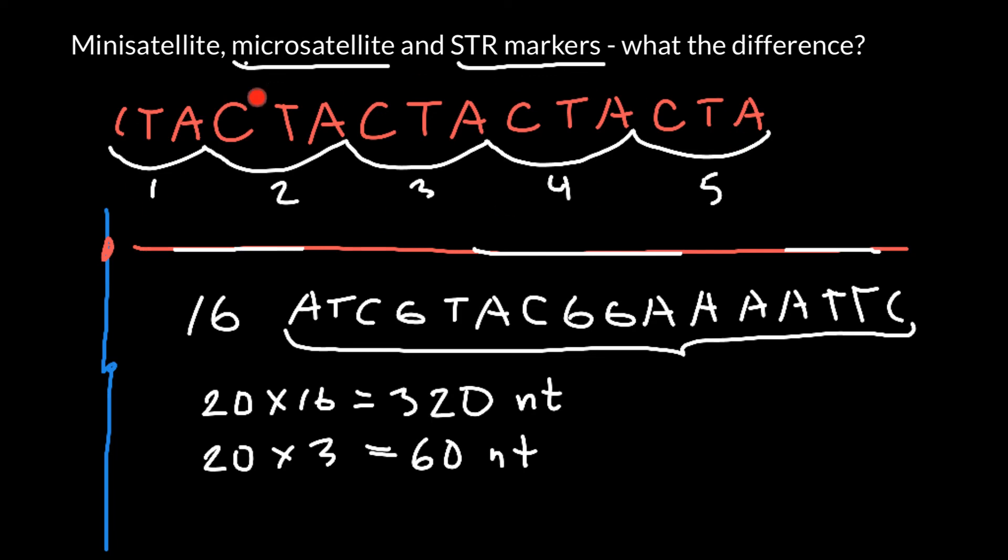When we have small fragments that repeat, like in this example, we call this a microsatellite unit, or STR marker. We usually call such markers that have repeat units between 2 and 8 nucleotides microsatellites. But if we have repeat units between 9 and, say, 20 or even bigger, we call such markers minisatellites, not microsatellites.